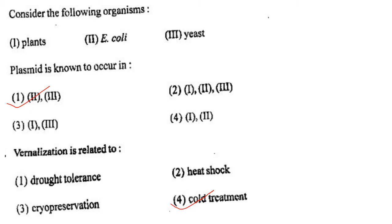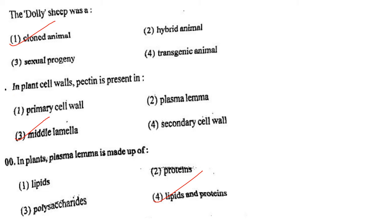Next one: Vernalization is related to option 1, drought tolerance; option 2, heat shock; option 3, cryopreservation; option 4, cold treatment. Answer is option 4: cold treatment.